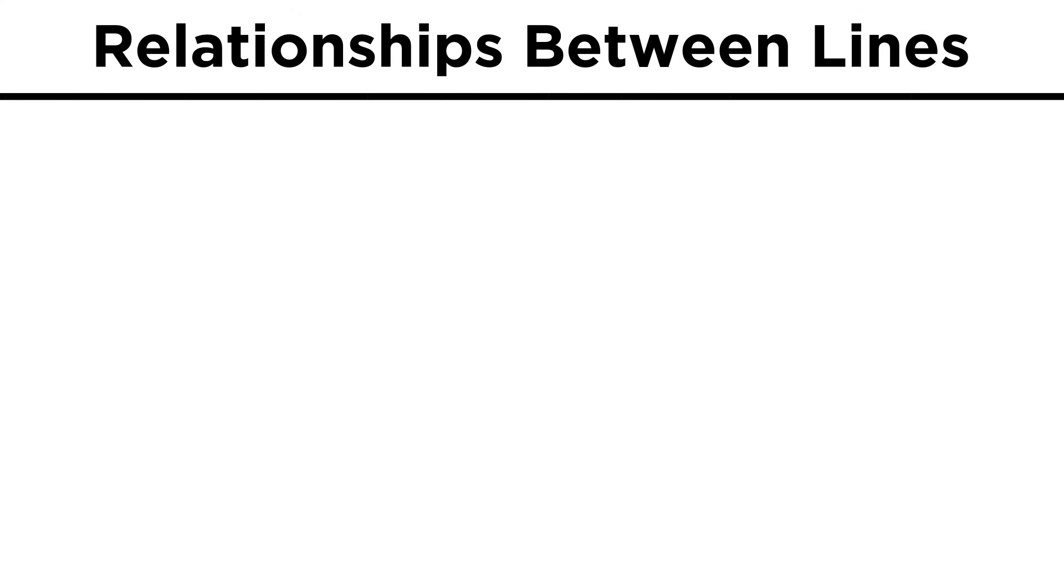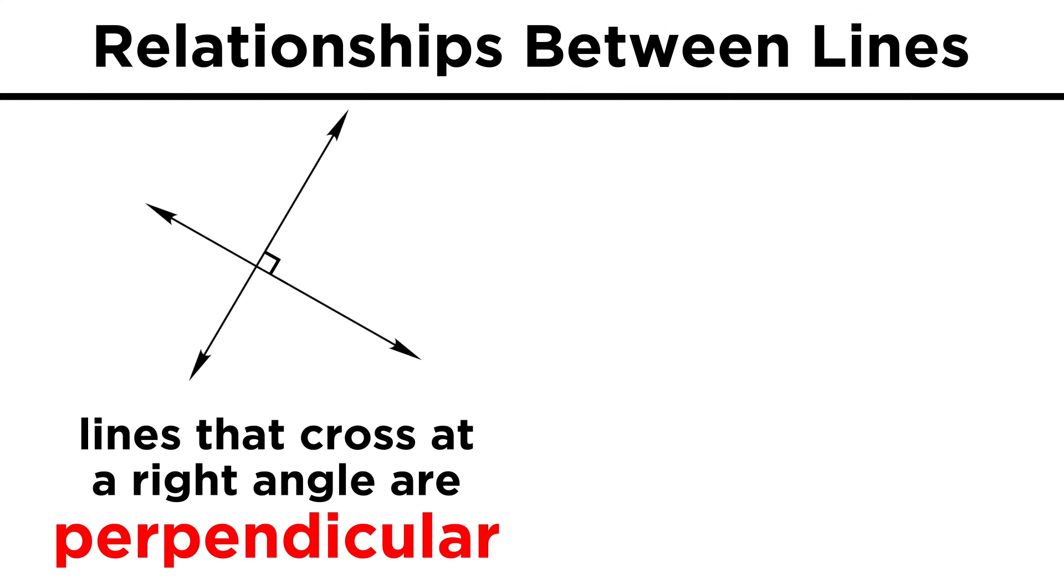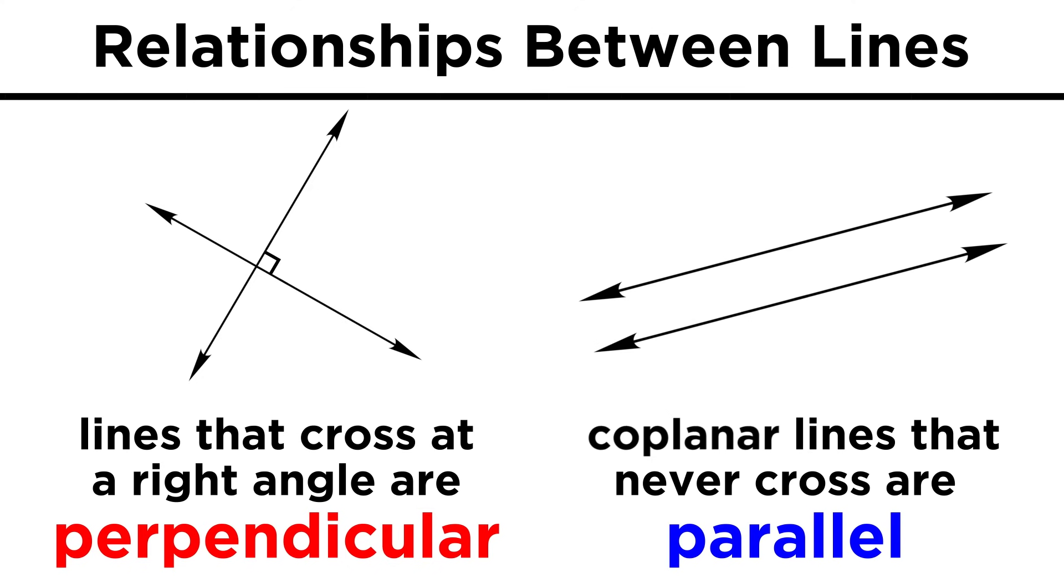Let's also recall some relationships between lines. If two lines within a plane intersect at a right angle, they are called perpendicular lines. If two lines within a plane do not intersect, they are called parallel lines.